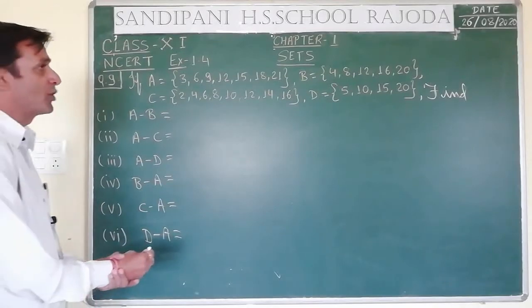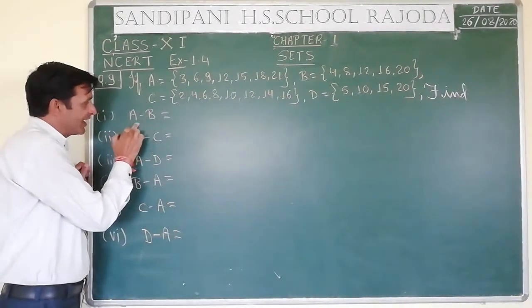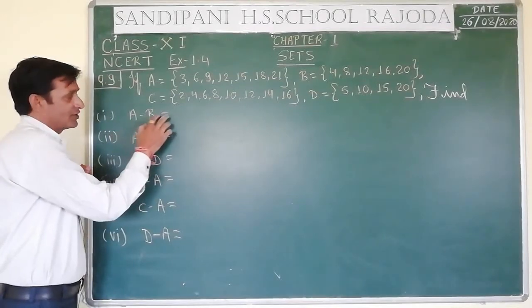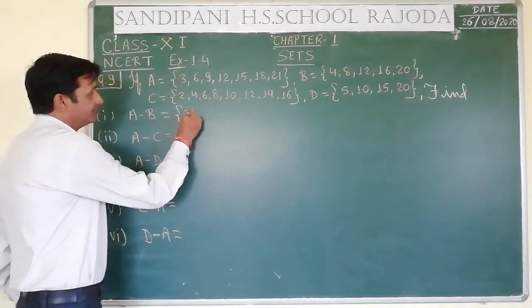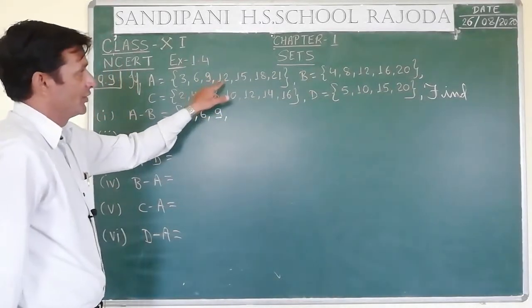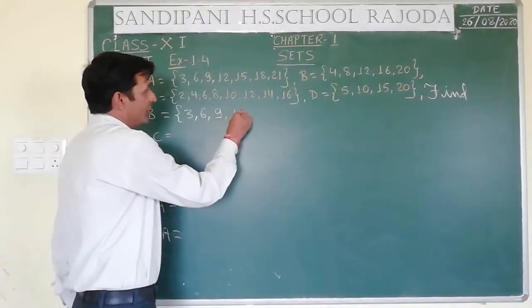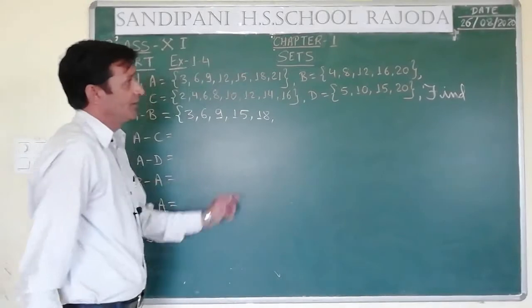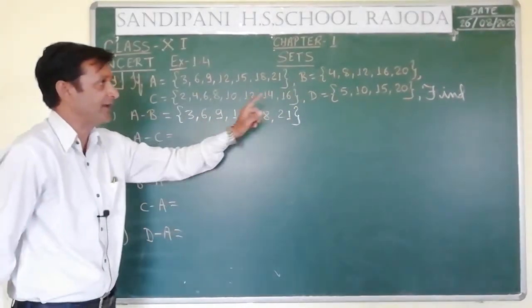Before calculating all these values, let me tell you the concept of set minus. When we write A minus B, we have to write all those elements of A which are not in B. So 3 is not in B — write it. 6 is not in B — write it. 9 is not in B — write it. Then 12 is in B — so we do not write it. 15, 18, 21 are not in B — write them. So A minus B = {3, 6, 9, 15, 18, 21}.